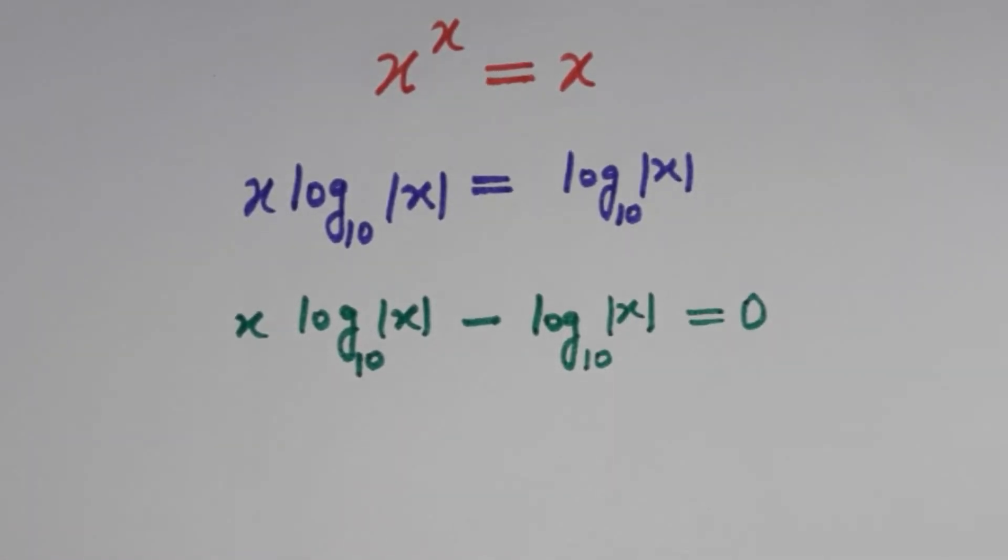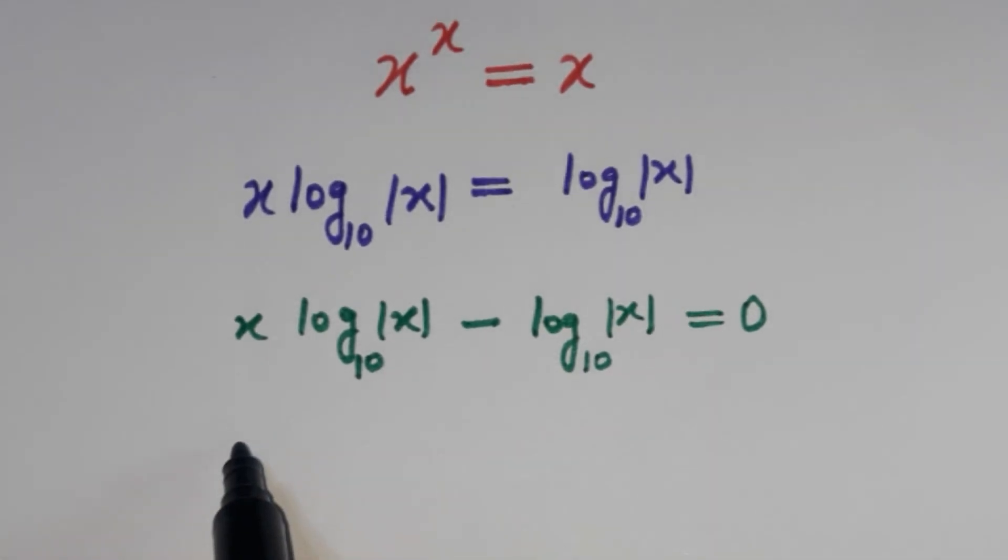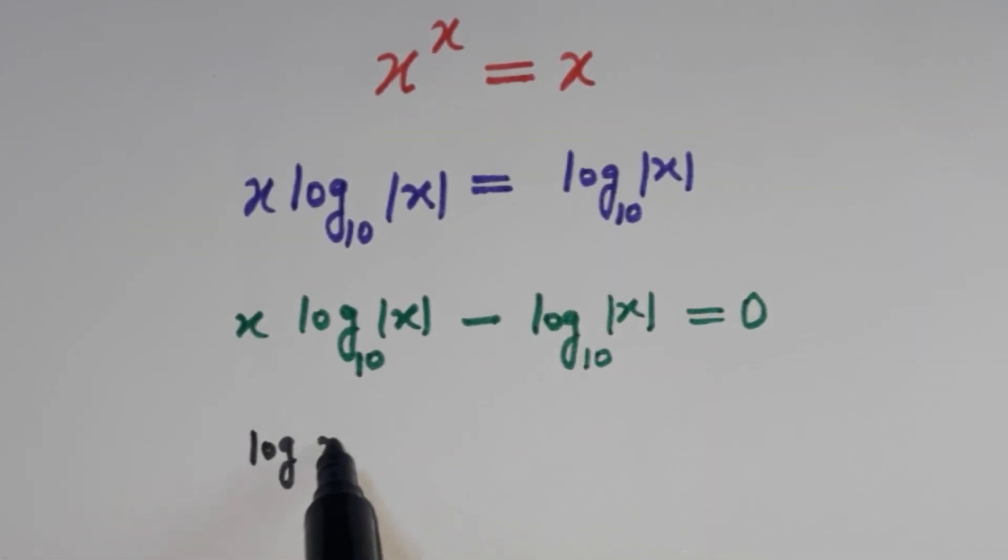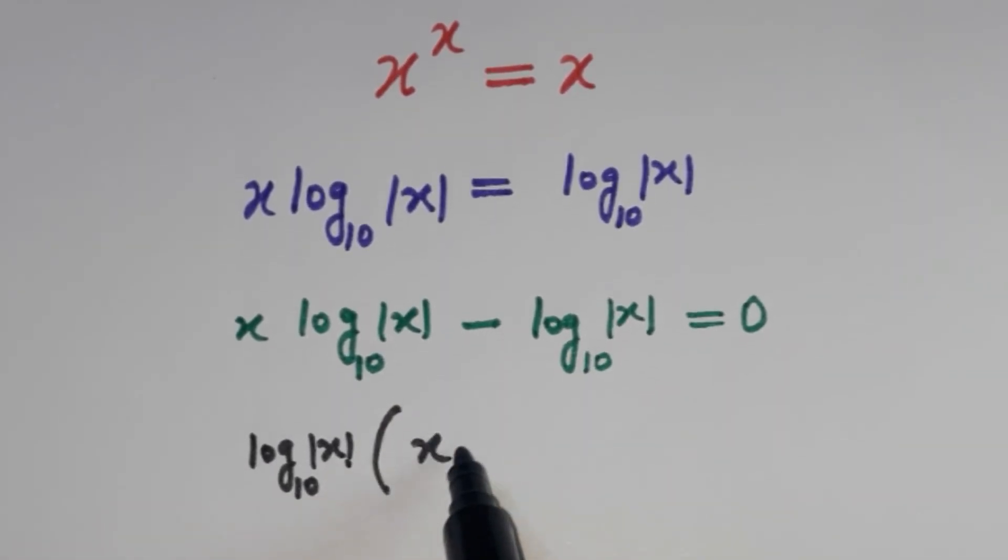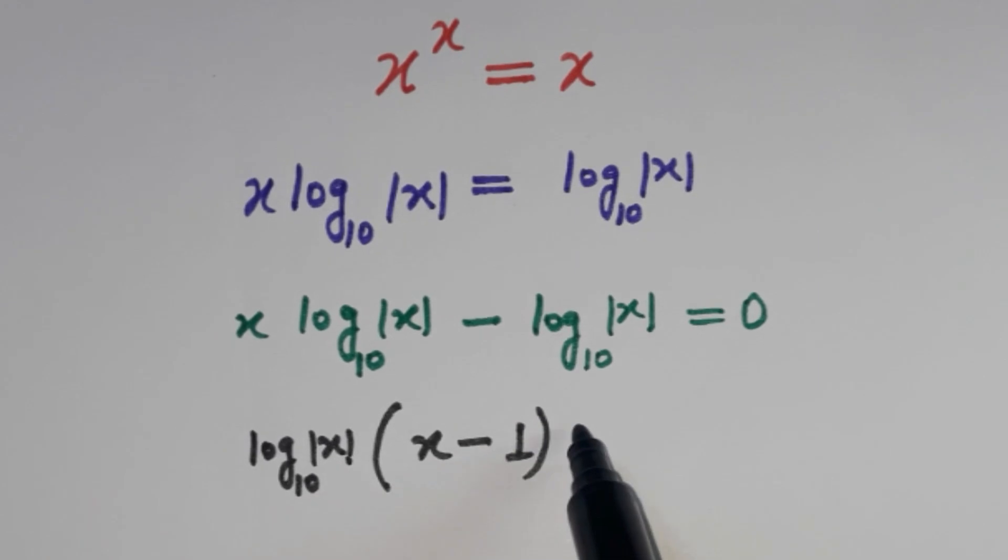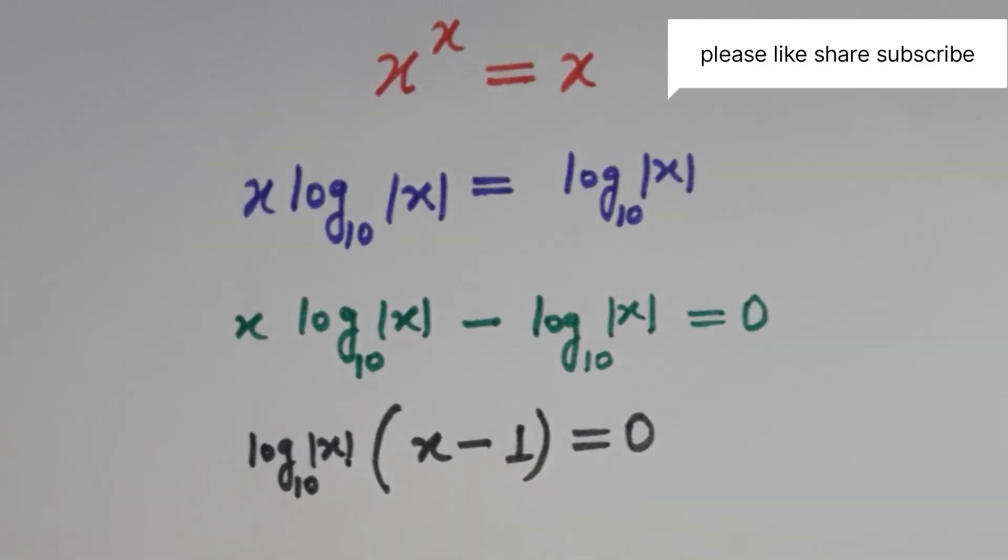That is equal to 0. Now I just take common over here, so it is becoming log mod x base 10 common, so we have x minus 1, that is equal to 0.